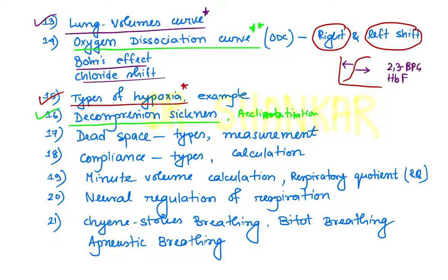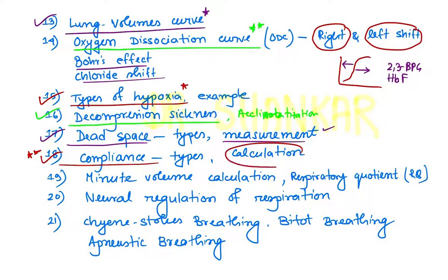Dead space is another important topic from the respiratory system: anatomical dead space, physiological dead space, total dead space — their calculation and how to calculate them. Problem-based questions are important. Another important topic is compliance — also important for problem-based calculation questions: specific compliance, dynamic compliance, how to calculate compliance. This problem-based calculation question is important for INICT exam and also for NIT. Minute volume calculation is also important as a problem-based question.